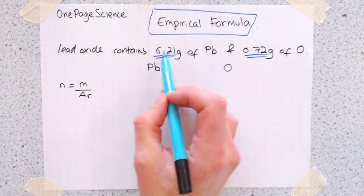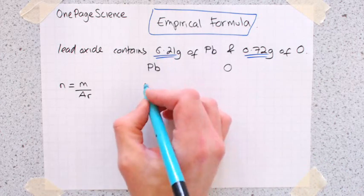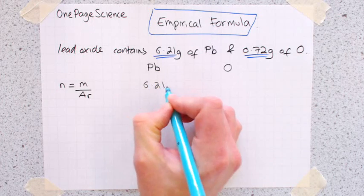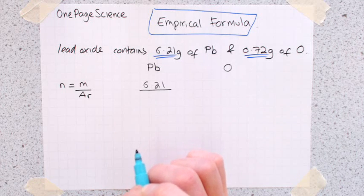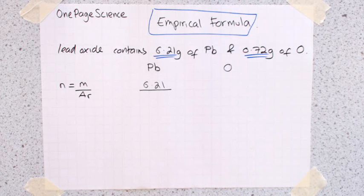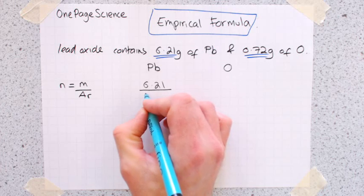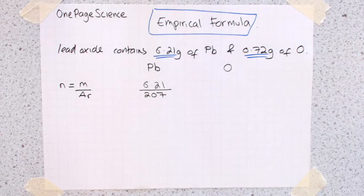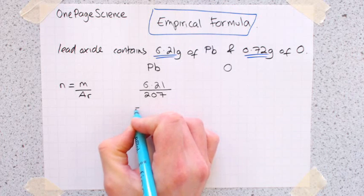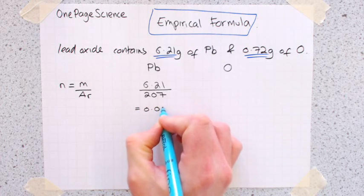So for the lead, we know the mass is 6.21. And then we divide that by the relative atomic mass of lead, so you'd get your periodic table, look it up, look at the top number, and you would find that for lead, that is 207. Stick that in your calculator, and that gives you a value of 0.03.